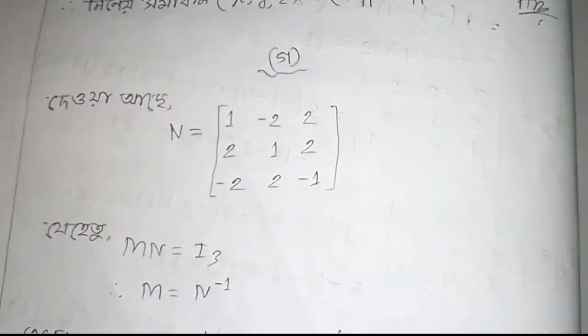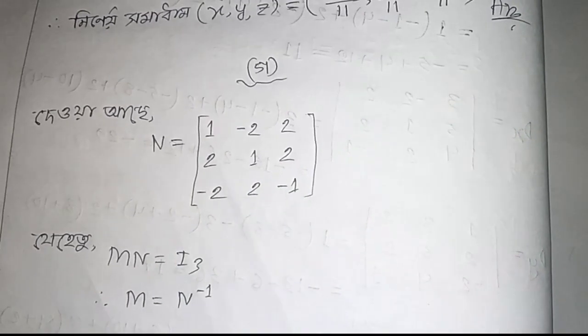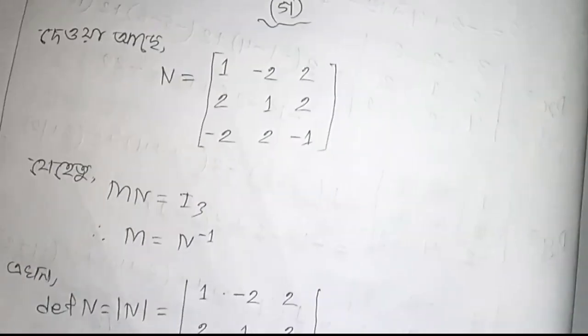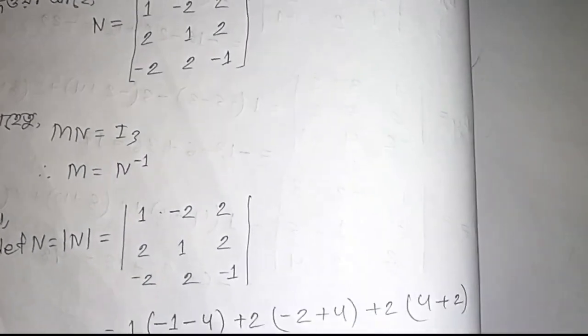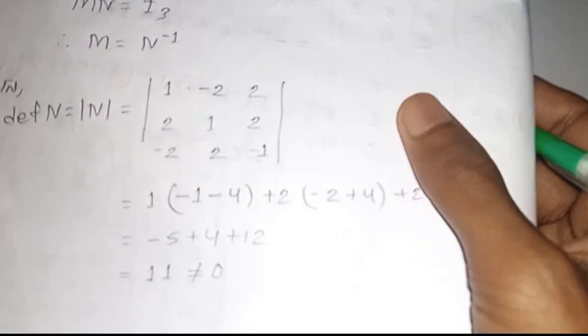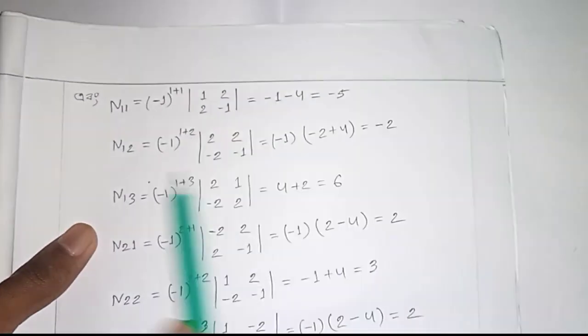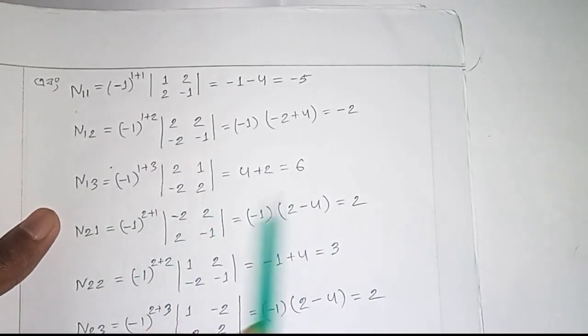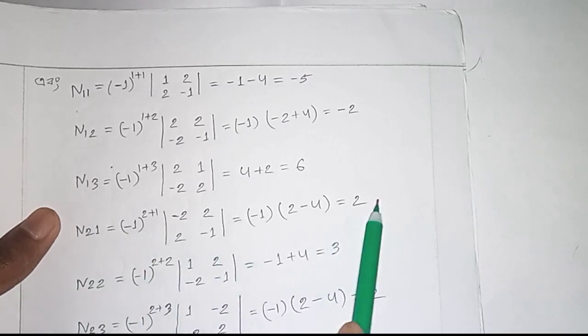We have a matrix for it. Then we have N equals to I3. M equals to N inverse. So the determinant of N is 11. Minus five and one two, minus two and one three, six and two one.